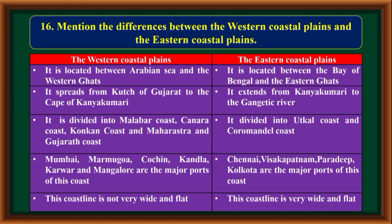The western coastal plain spreads from Kutch of Gujarat to the Cape of Kanyakumari. The eastern coastal plain extends from Kanyakumari to the Gangetic river. The western coast is divided into Malabar coast, Konkan coast, and Maharashtra and Gujarat coast.